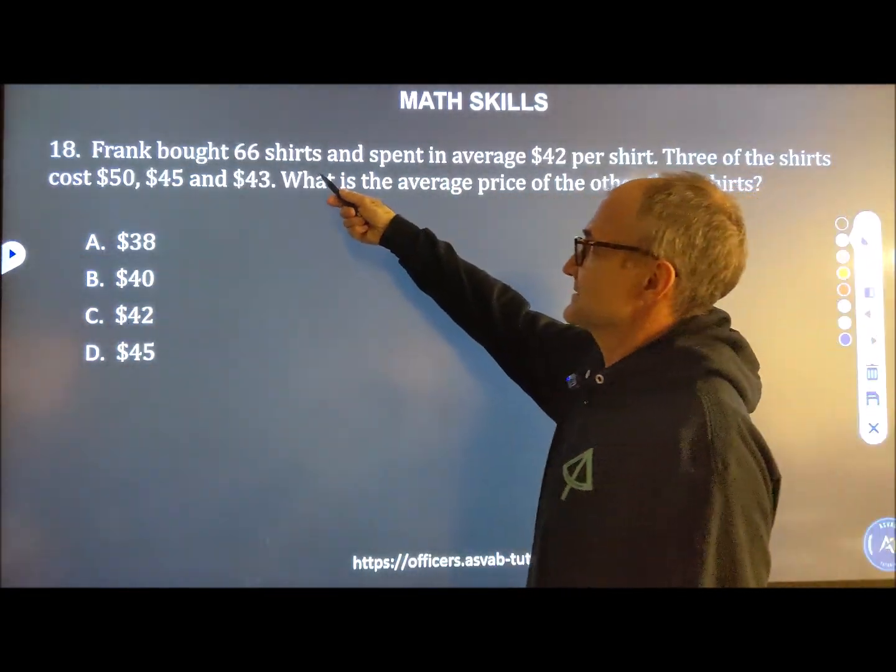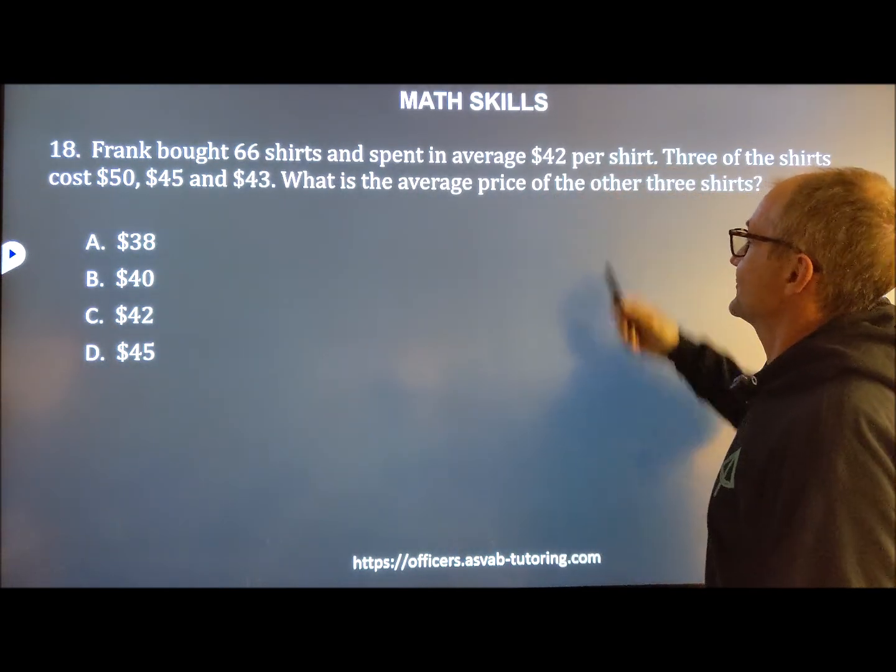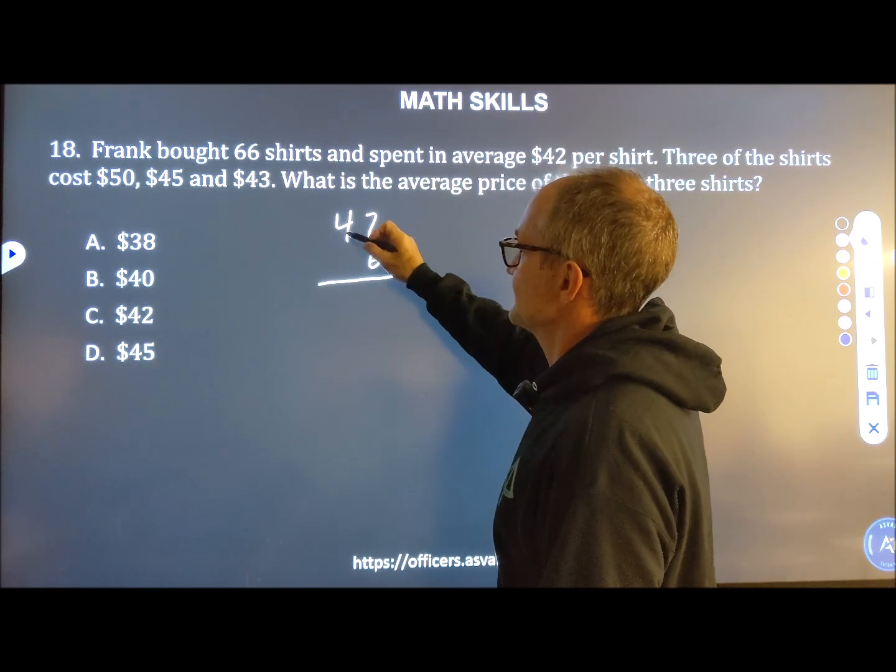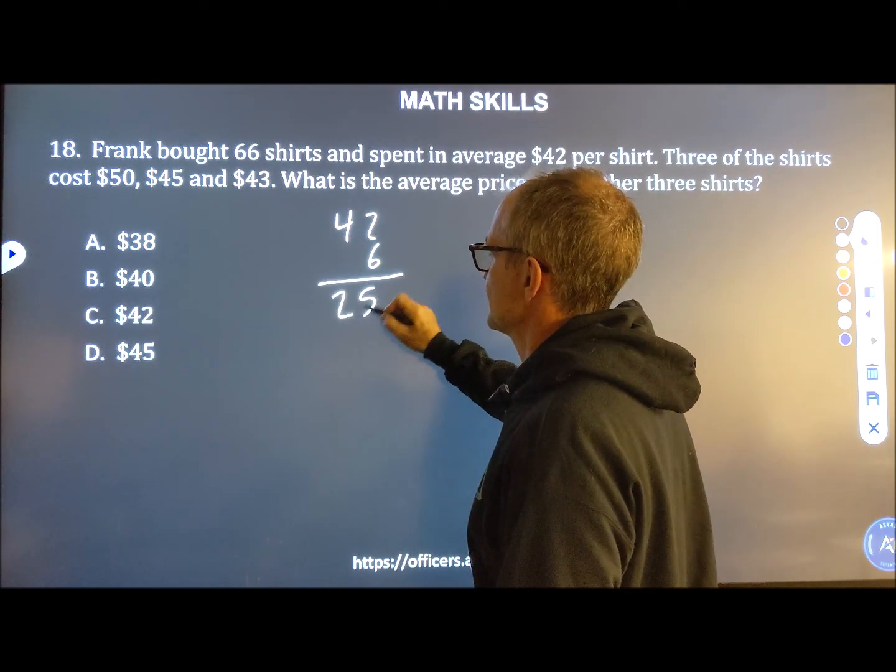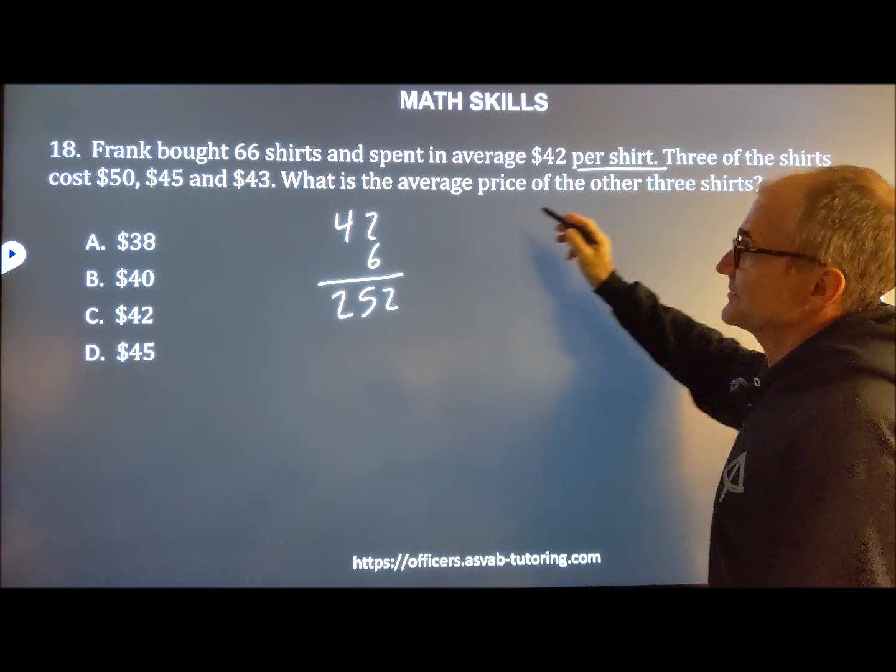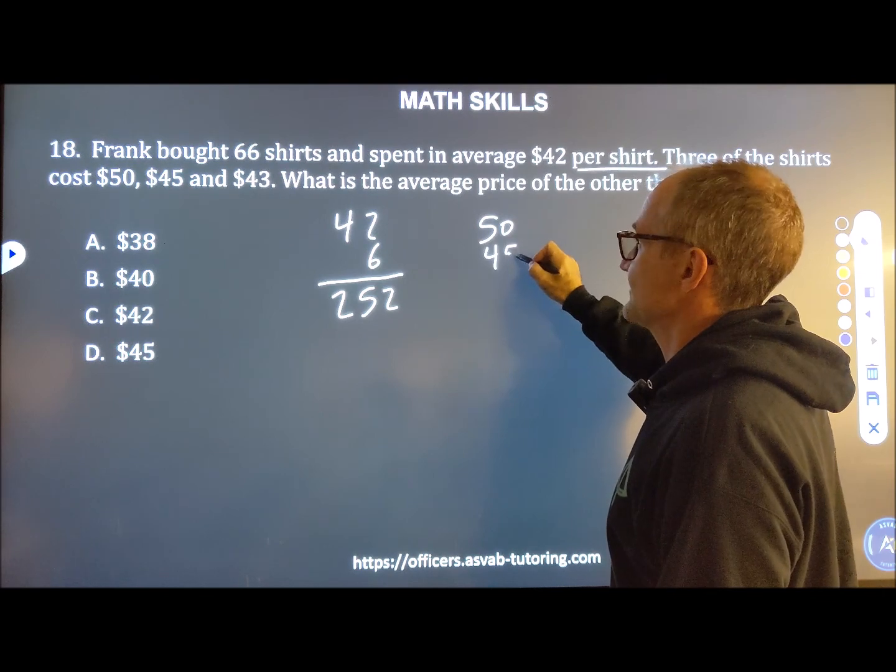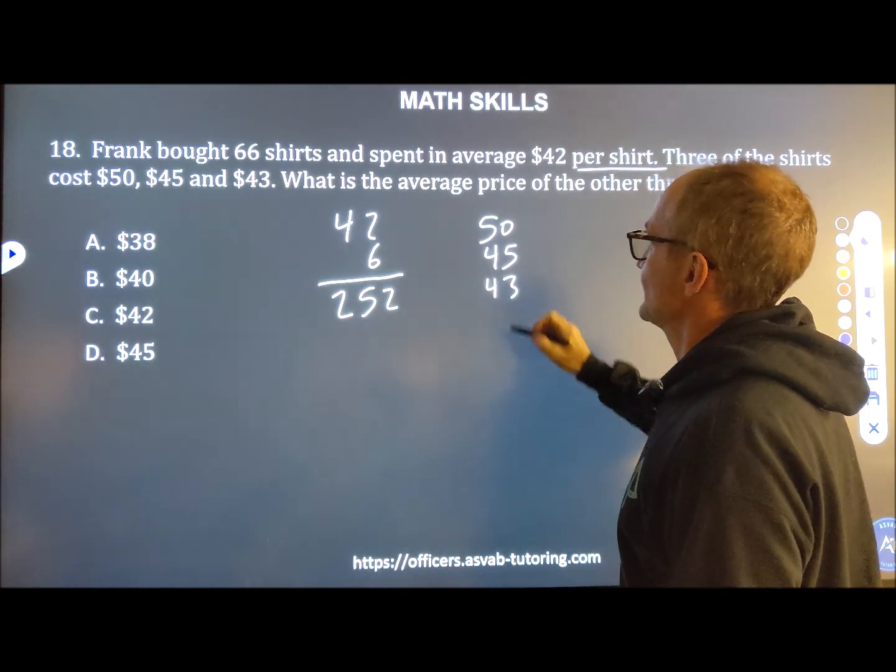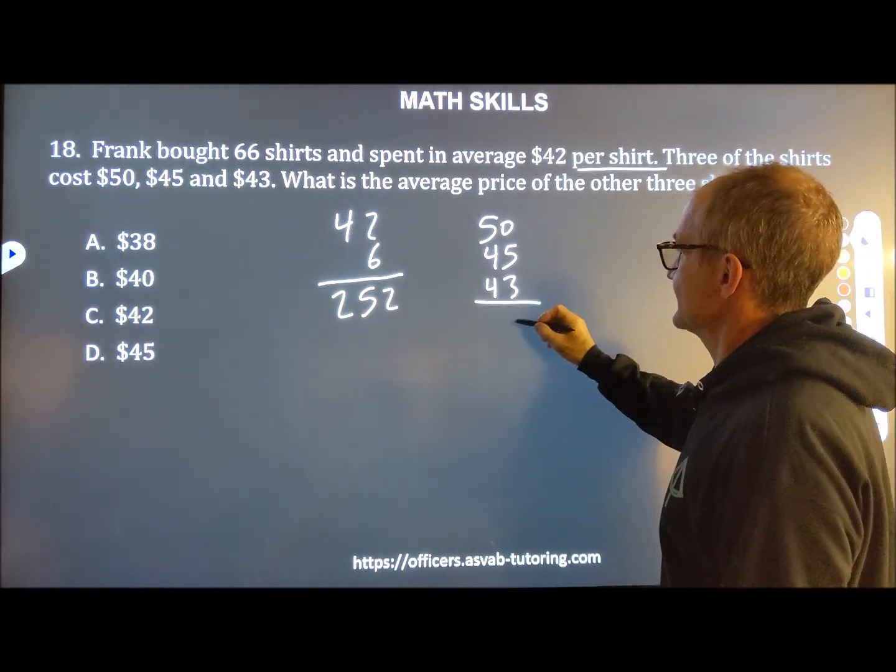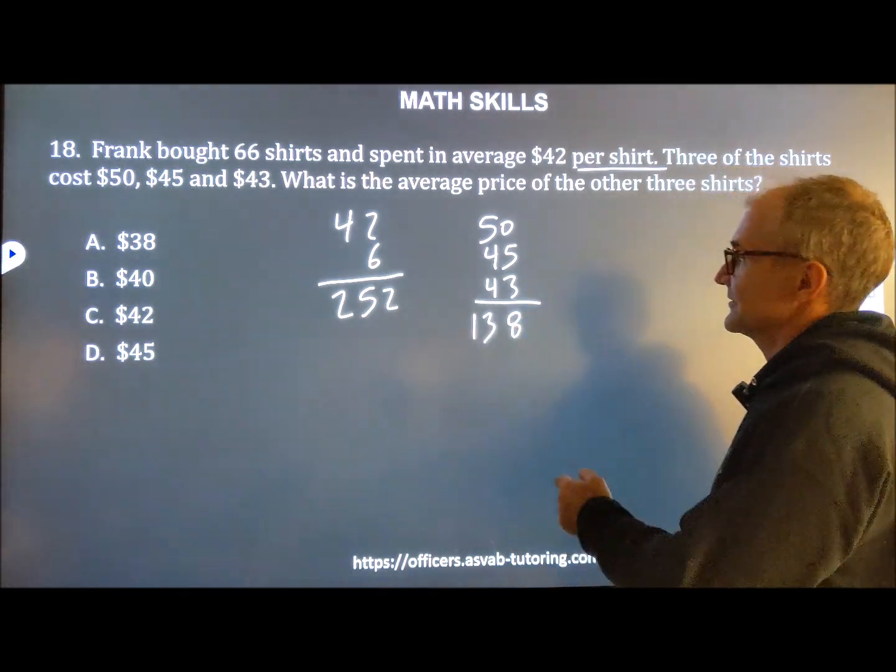Frank bought 66 shirts. That must be a typo. It must be six shirts and spent an average of $42. So I'm going to take that 42 times 6, 240, 252. So you spent a total of $252. Three of the shirts cost 50, 45, and 43. What is the average price of the remaining three shirts? So this is going to be 8 and 8 and 13. So you spent 138 on three of them.